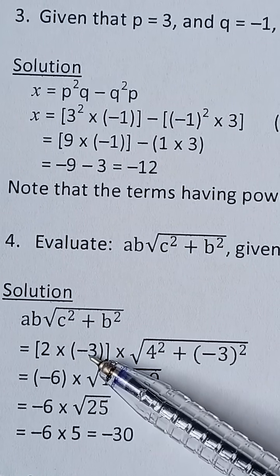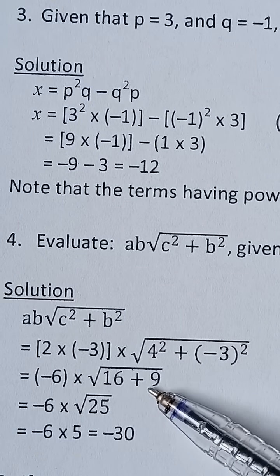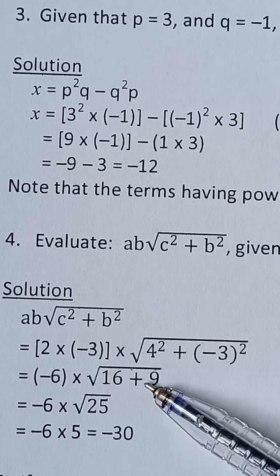So 2 multiplied by negative 3 will give you negative 6, and then 4 squared is 16, and negative 3 squared is 9.